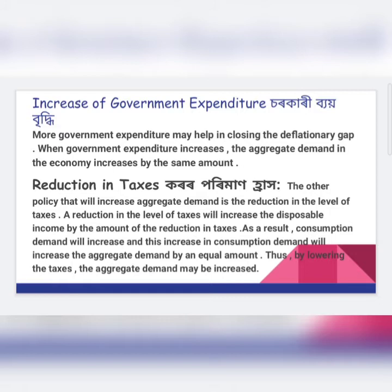The first measure is increase of government expenditure. When the government increases its expenditure, it will increase the income of the people, and when the income of the people increases, it will automatically increase the demand of the economy, which may correct the problem of deficient demand by increasing aggregate demand.